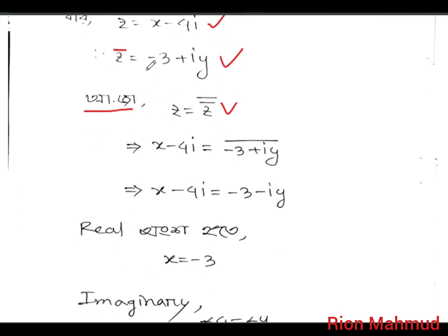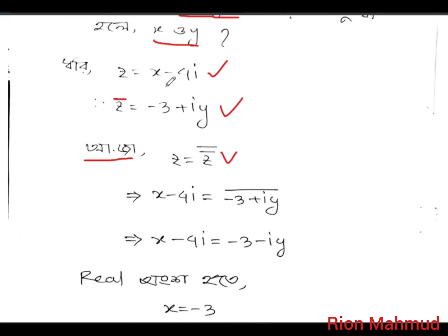I love x minus 4 and making a single that the bottom account: x is minus 3 plus iy. Correct about the level, okay.